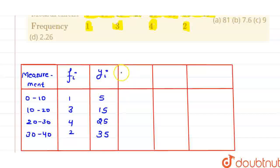Now, let us calculate ui. For ui, we need some middle number. Let capital A be 25. We can take any middle number from this column. So A is 25. Then, ui will be yi minus capital A divided by h. Here, h is the height of this interval, which is 10 here.